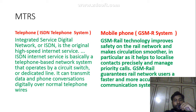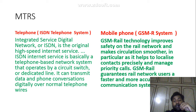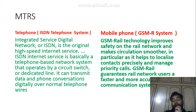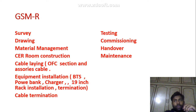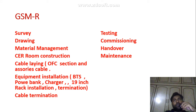GSM-R technology improves safety on the rail network and makes circulation smoother. In particular, it helps to localize contact principally and manage priority calls. GSM-R guarantees rail network users a faster and more accurate communication system.